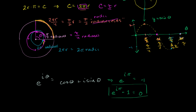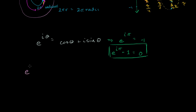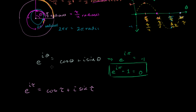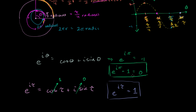The strong pi defenders would say: you just pointed out one of the most beautiful identities in mathematics — how does tau hold up? Well, e to the i tau equals cosine of tau plus i times sine of tau. Tau radians means we've gone all the way around the unit circle, so cosine of tau equals 1 and sine of tau equals 0. Therefore e^(iτ) = 1. I'll leave it up to you to decide which seems more aesthetically profound.